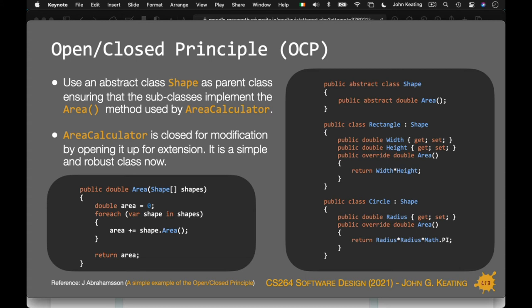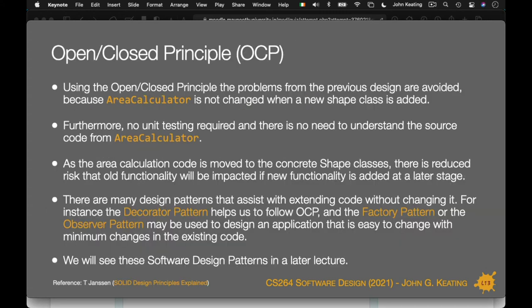Using the Open/Closed Principle, the problems in the previous design are avoided. The area calculator is not changed when new shape classes are added. No unit testing is required for unchanged code. Because the area calculation is moved to the concrete shape classes, there's reduced risk that old functionality will be impacted when new functionality is added. Lots of design patterns assist with extending code without changing it — for example, the Decorator pattern, the Factory pattern, and the Observer pattern — and we're going to see those in later lectures.